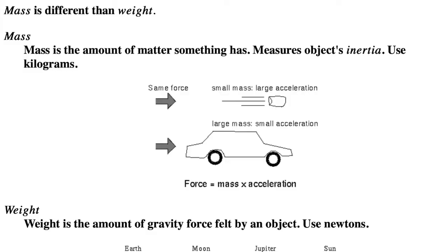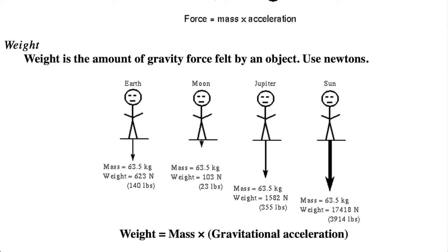This slide is about how weight is different from mass. Mass is the amount of matter in something, or basically the number of protons and neutrons in something. It measures the object's resistance to a change in its motion, its inertia. We use kilograms for mass in the metric system. Weight is the amount of gravity force felt by an object, so it depends on the gravity environment. We use Newtons for weight in the metric system.